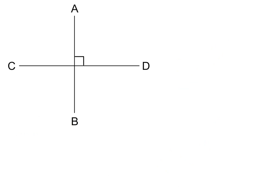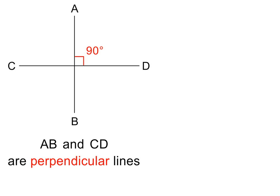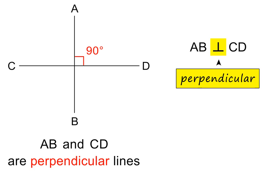Here we have two lines AB and CD which intersect at 90 degrees. We know that it is 90 degrees because this is the symbol we use for a right angle. Whenever lines intersect at 90 degrees, we call them perpendicular lines. In maths we can write this in shorthand: AB is perpendicular to CD. Please pause if you need to.